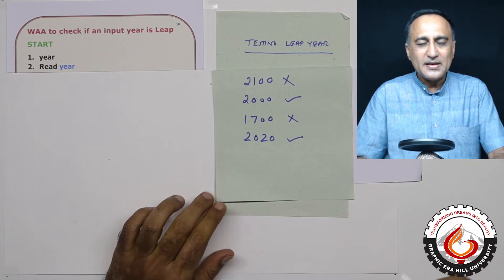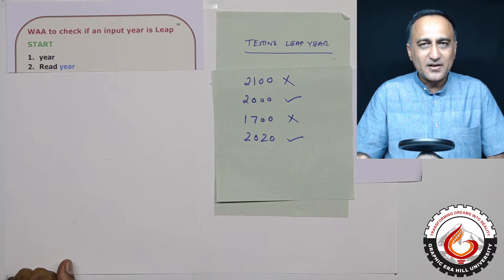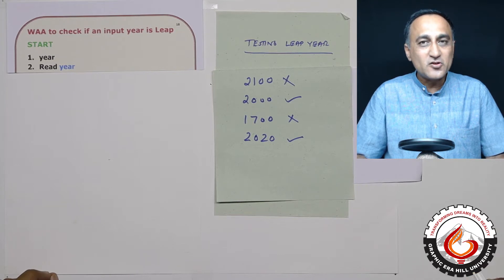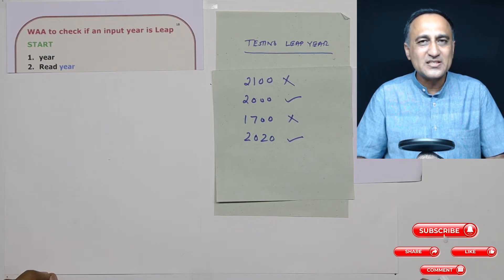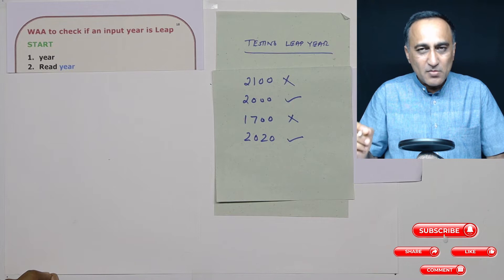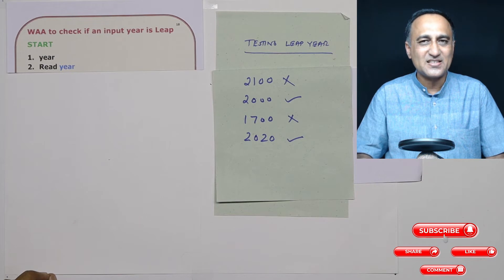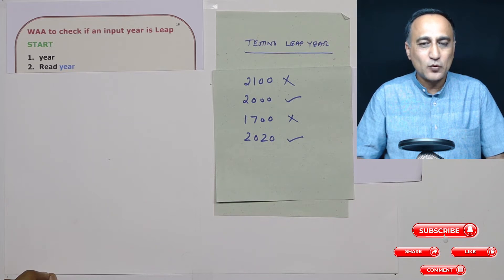The theory behind a leap year is this: every year we have roughly six hours extra, but it is not exactly six hours — it is slightly less than six hours. So at the end of four years, we add one extra day in February, treating that as a leap year. But since we don't have exactly six extra hours per year, we are actually doing an approximation by adding one day after four years.